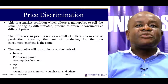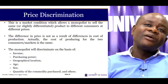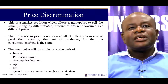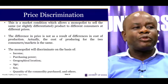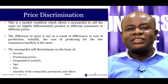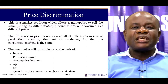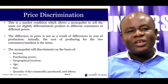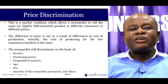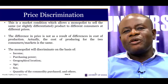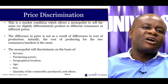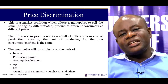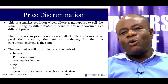The second type of monopoly is the price-discriminating monopolist, who sells the same commodity — or a slightly differentiated product — to different consumers at different prices. The difference in price is not due to differences in production costs. The monopolist discriminates on the basis of income, purchasing power, geographical location, age, sex, and quantity purchased.